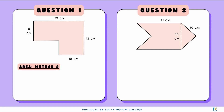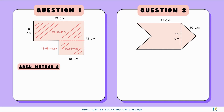The second method is to cut the shape into two rectangles. The top rectangle has a length of 15 centimeters and a width of 8 centimeters, giving an area of 120. The smaller rectangle uses a length of 10 centimeters and the 4 centimeters of width worked out earlier, giving 10 times 4 equals 40. Adding them together: 15 times 8 plus 10 times 4 gives us 120 plus 40, which also gives us 160 centimeters squared.